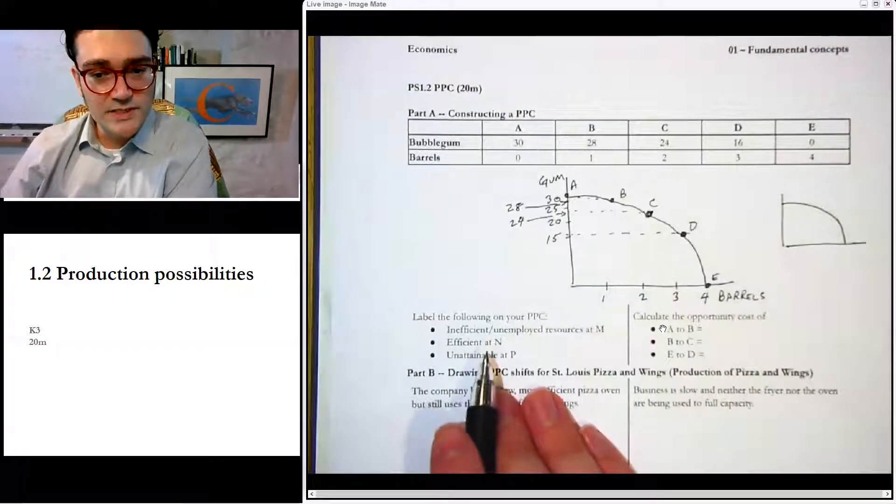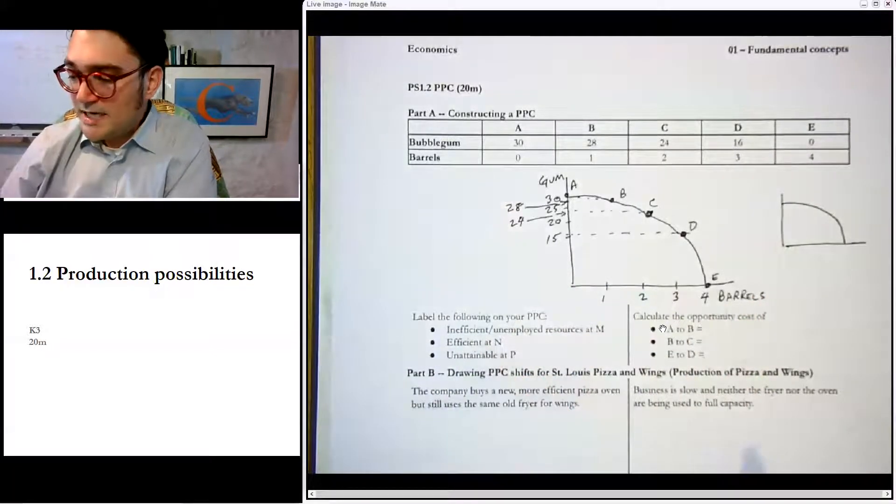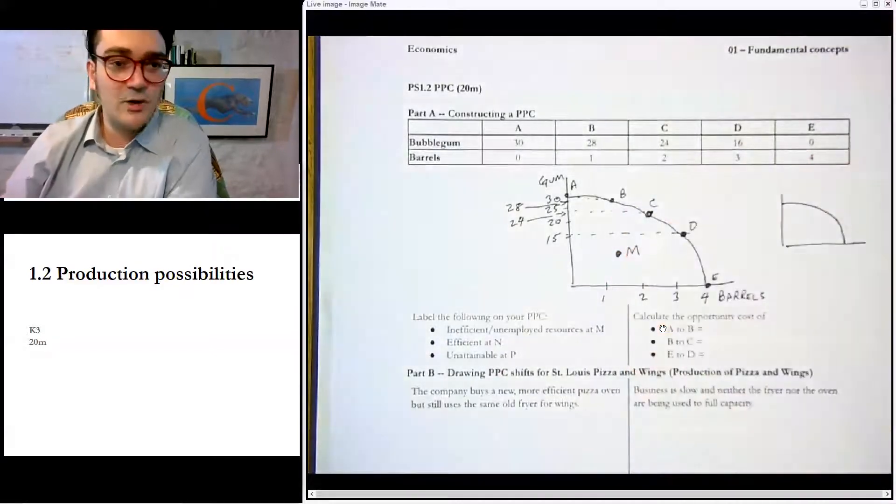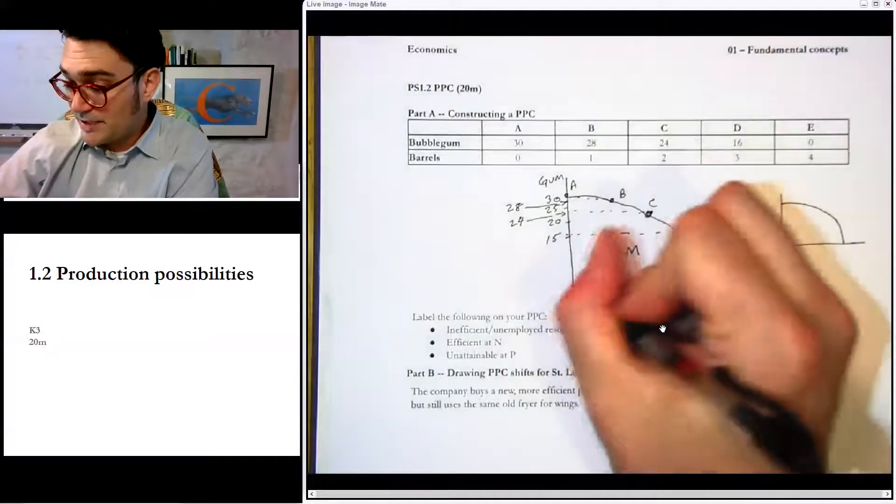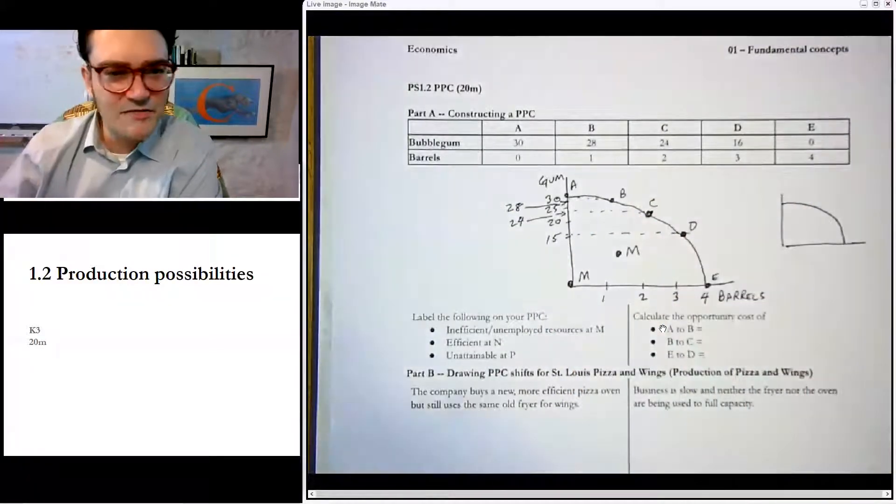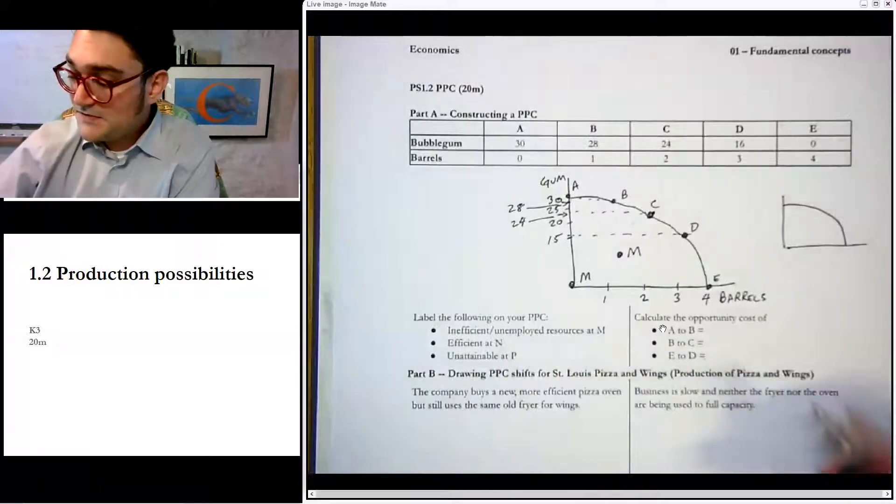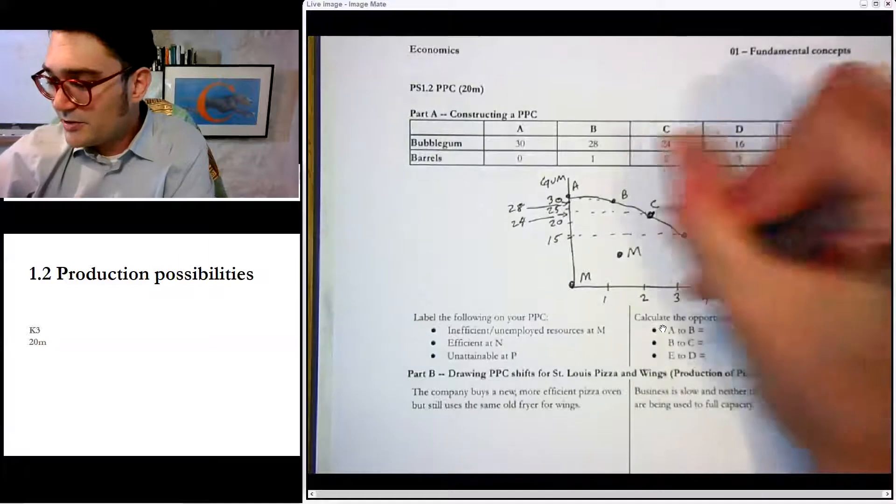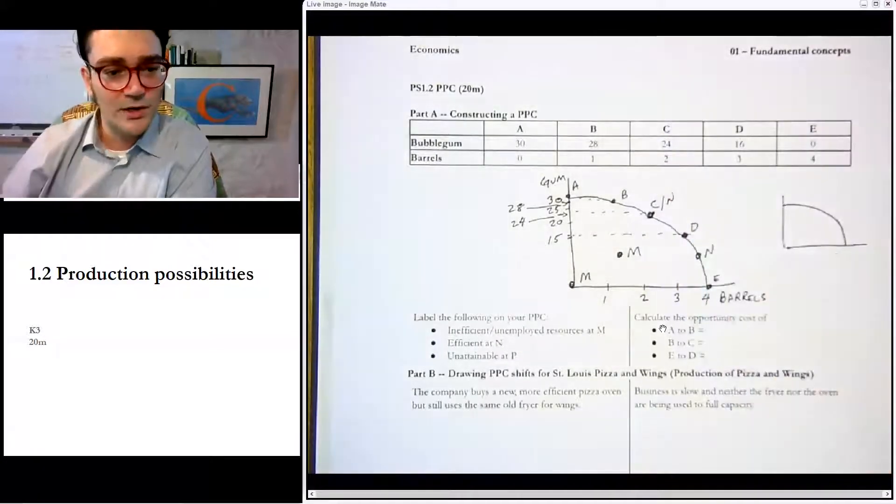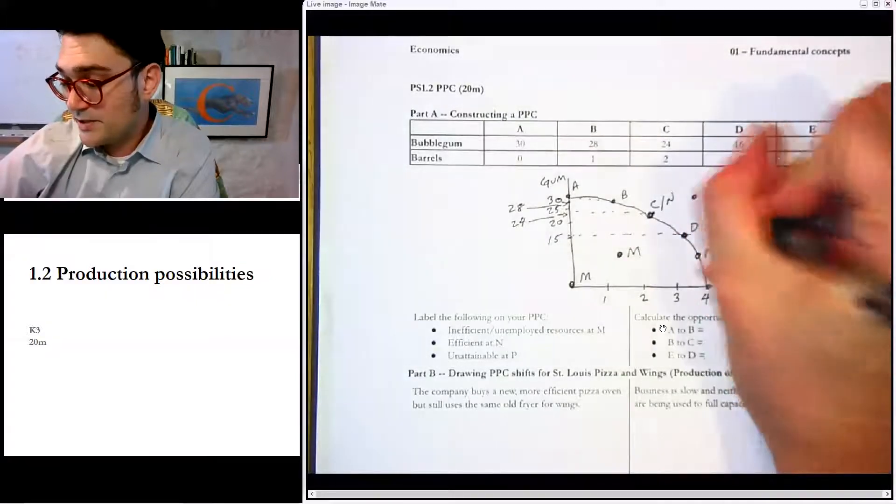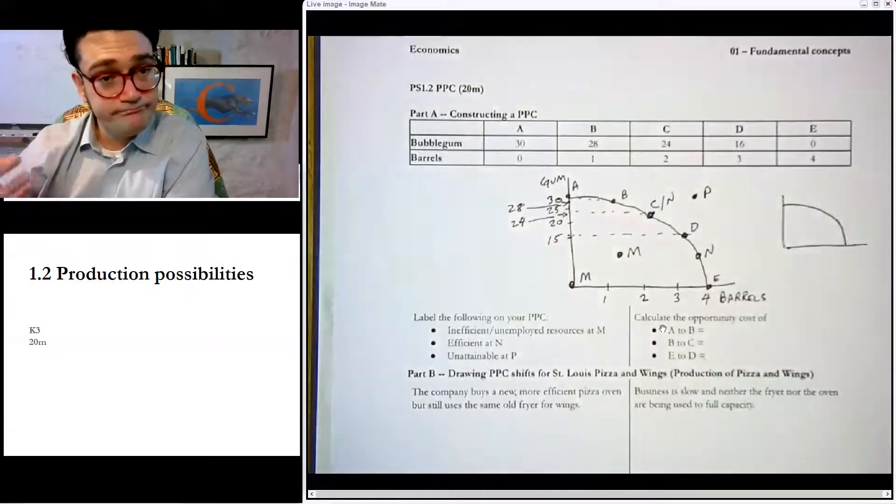Now we're going to label some points on this PPC. Inefficient or unemployed, that's any point inside. Doesn't matter where, it actually could be like all the way down to here. It just has to be within the quadrant. You can't have negative production. Now, efficient would be any point on the curve. You could actually name N there, or you could put N there, whatever you want to do. Unattainable would be any point beyond it, so way up here, point P.